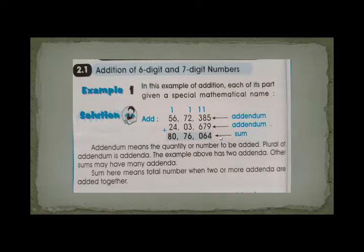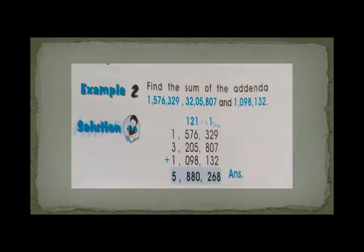Hope you all know very well what addend and sum are. Now we are moving to example number 2: find the sum of the addenda. How many addends are given here? Three addends are given here.